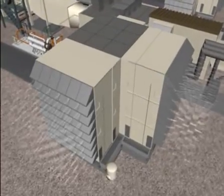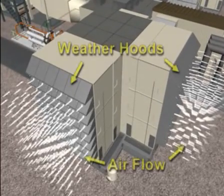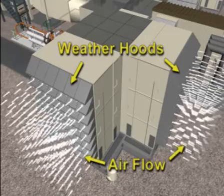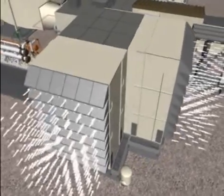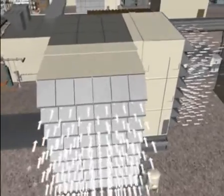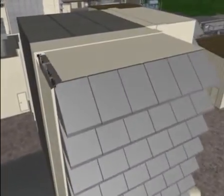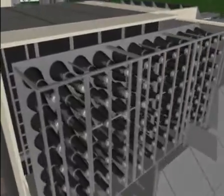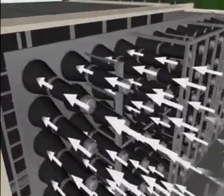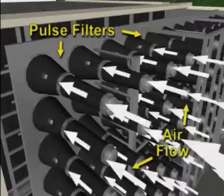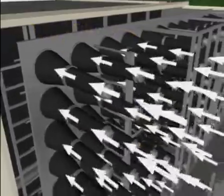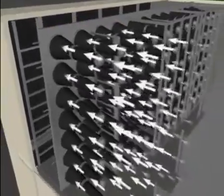The incoming air to the combustion turbine first goes through a weather hood to a filter housing. The weather hoods protect the filters from the effects of rain and sun and help minimize the amount of debris drawn into the filters. The air is drawn into and through the filter canisters. These filters remove particulates from the incoming air before it is admitted to the compressor inlet.